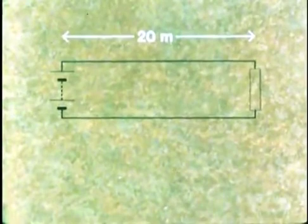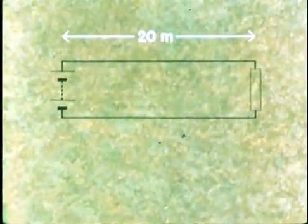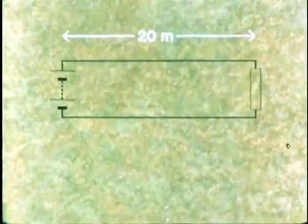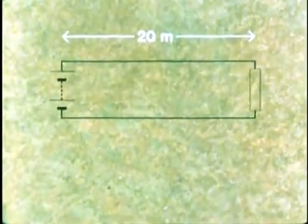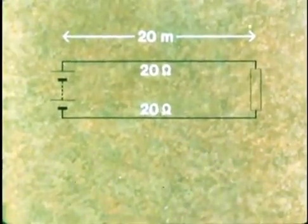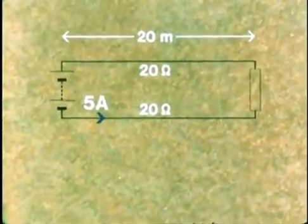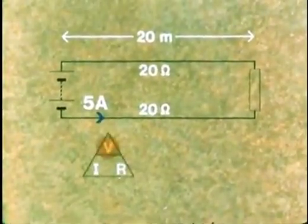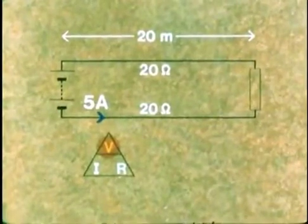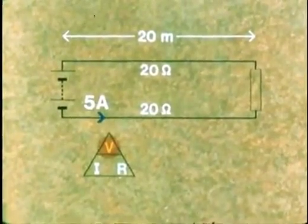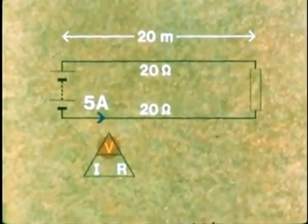For example, if a cable is 20 meters long and has a resistance of 1 ohm per meter, then the resistance of the cable will be as much as 20 ohms each way. If a 5 amp current is flowing, we could use the Ohm's law triangle to show that there is a voltage drop of 100 volts in each cable, a total of 200 volts.